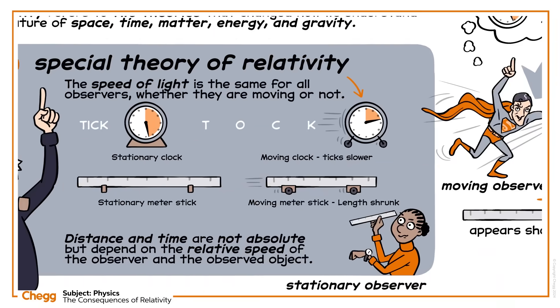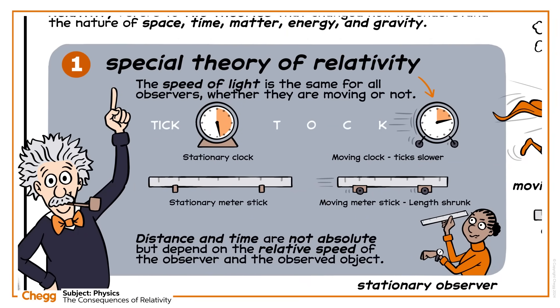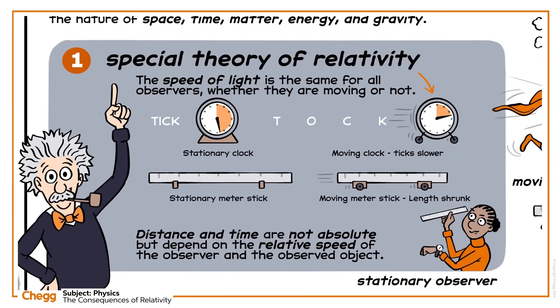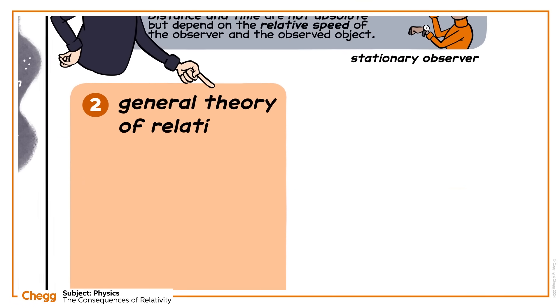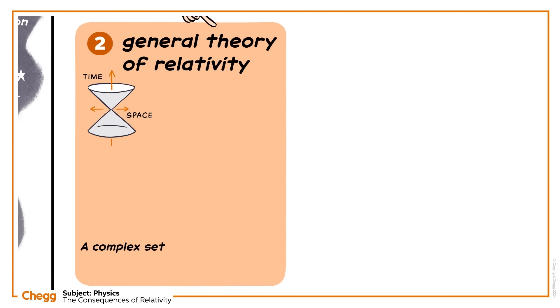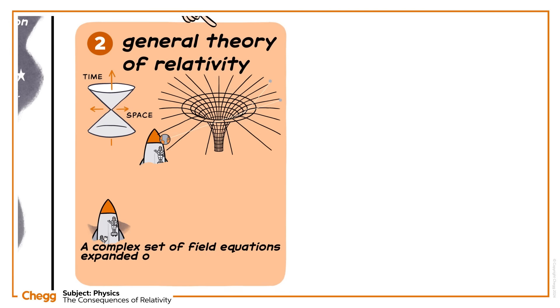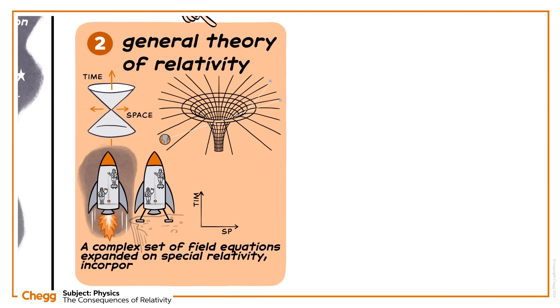These equations relate to Einstein's first theory, special relativity. He later introduced a second, the general theory of relativity. It's a complex set of field equations expanded on special relativity, incorporating gravity into the space-time framework.